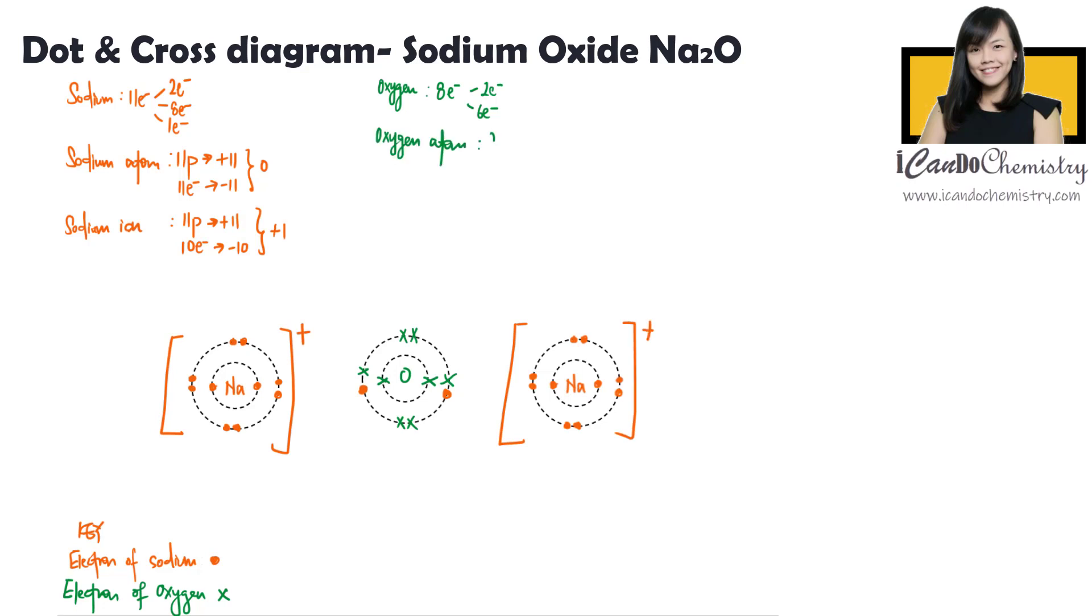For oxygen, the atom has eight protons, which gives it a charge of positive 8, while eight electrons, which gives it a charge of negative 8. The overall charge of this atom is zero.